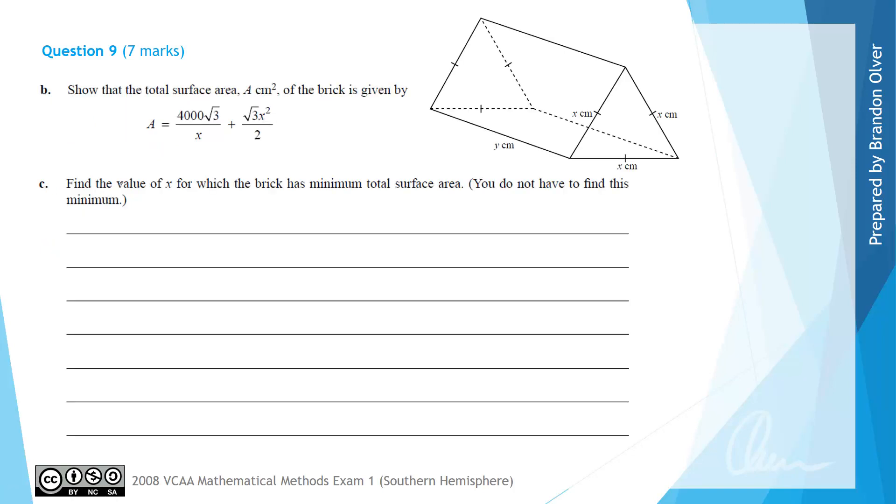For part C, we're asked to find the value of x which the brick has a minimum total surface area, but we are not required to find that actual minimum. Usually when we're asked to maximize or minimize something, we're going to calculate dA/dx, the derivative, and set it equal to 0 to find the minimum. This rule here can be written as 4000 root 3x to the power of negative 1 plus root 3x squared over 2. Therefore when we calculate the derivative, when we take the power at the front, we'll get minus 4000 root 3x, and 1 off the power will give negative 2, plus when we take the power at the front and 1 off the power of the second term, we'll just get root 3x. We want that to equal 0 to help us find that minimum.